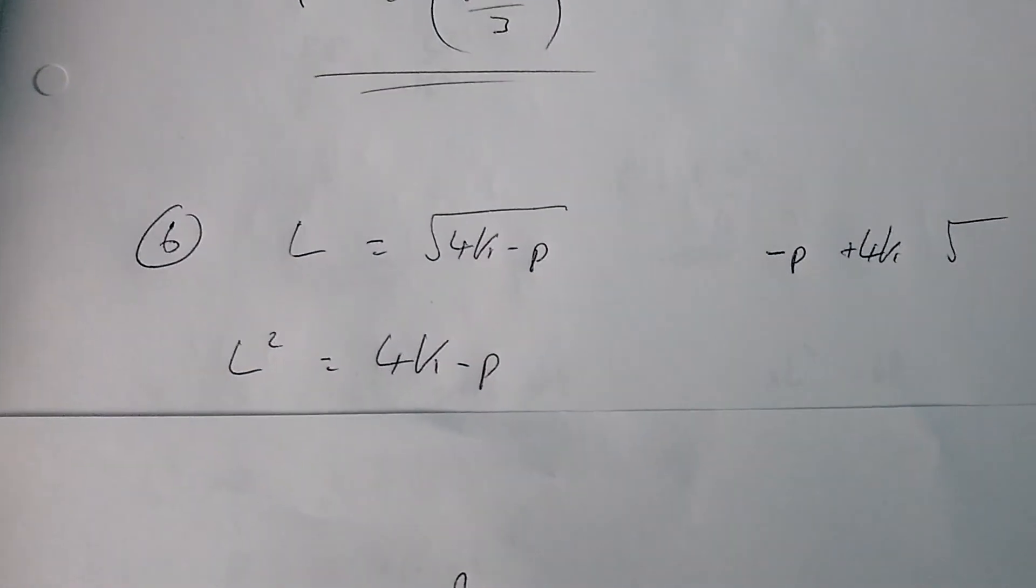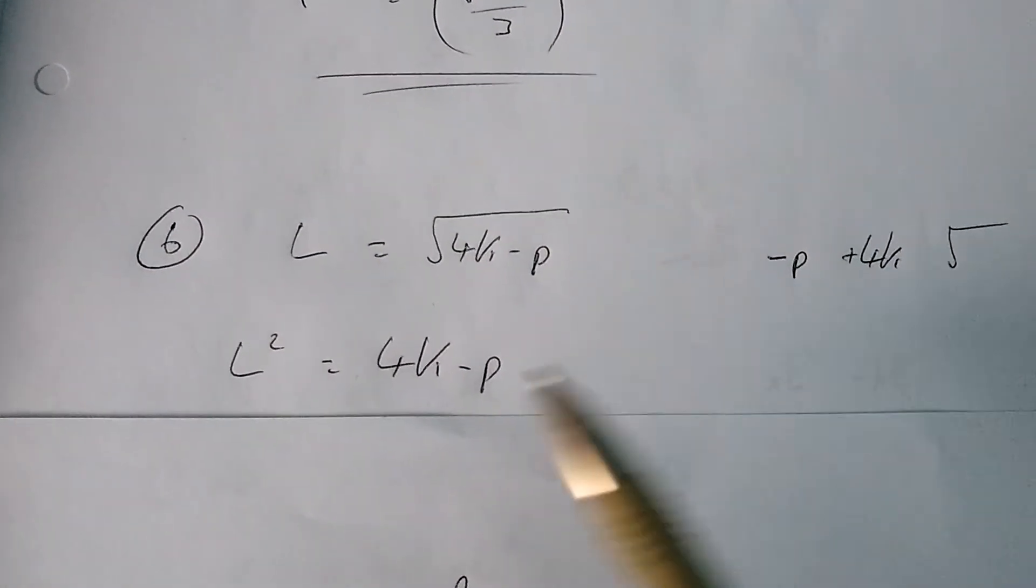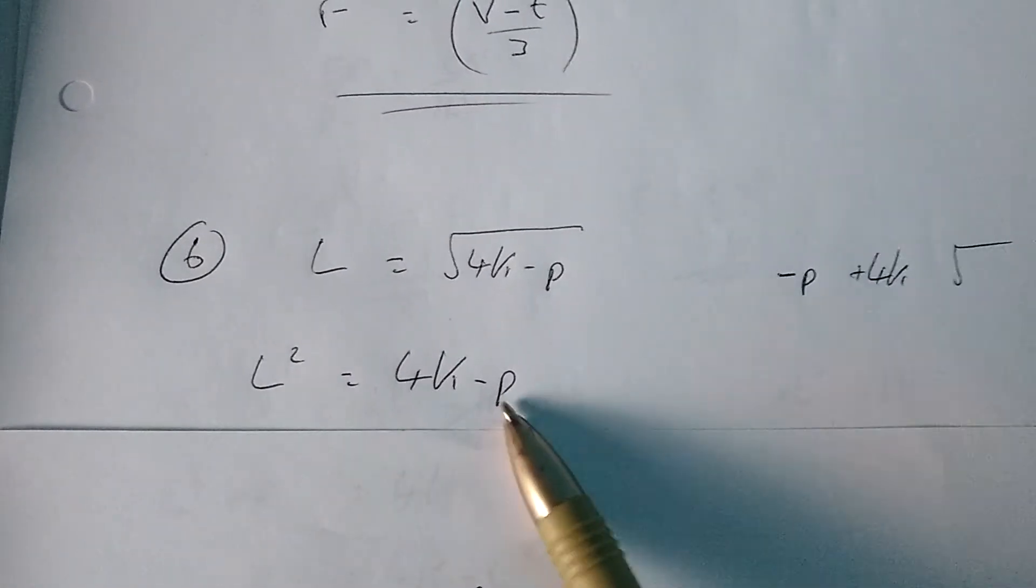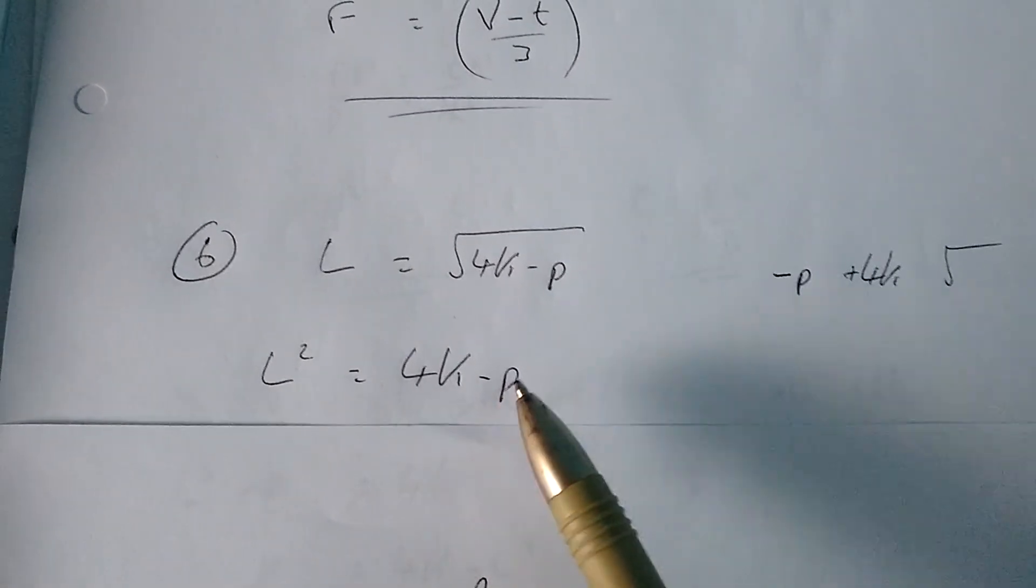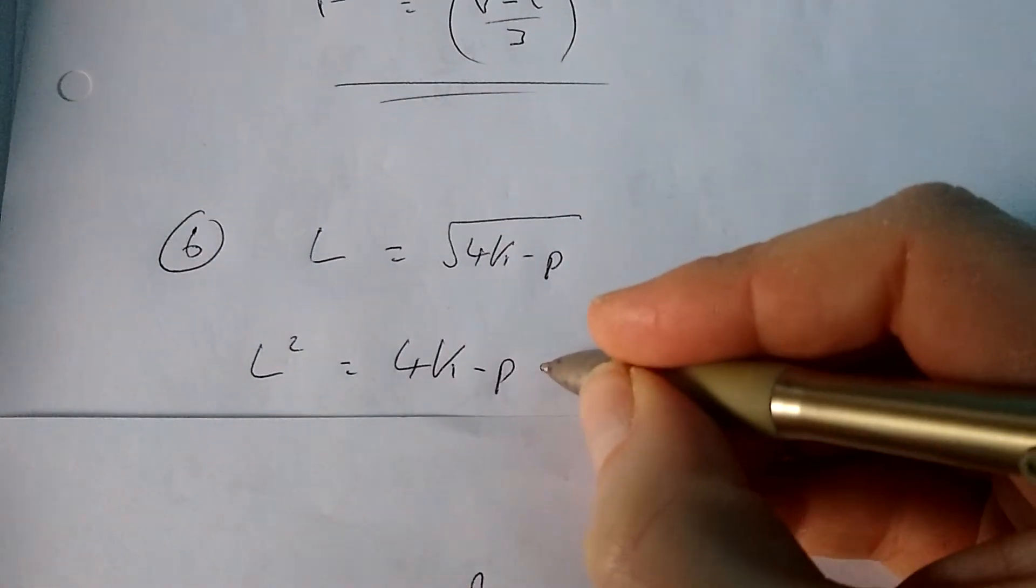Now normally I deal with the 4k next, but what I'm thinking is I want to make p the subject, not minus p. So what I'm actually going to do, I'm going to add p to both sides at this point.